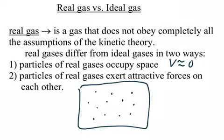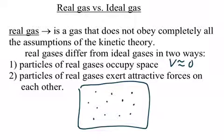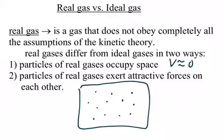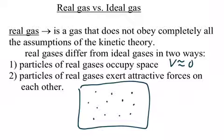The interactions are very minimal. So the two assumptions are: an ideal gas has no volume, but in real life it does — it's just very small. And two, we're going to assume that gases do not attract nor repel. But real gases do show attraction and repulsion — it's just very weak because they're very far apart.